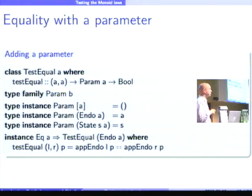So, I introduce a class TestEqual, which takes a pair of values, which I want to compare for equality, a parameter, which I need for determining equality, and then returns a boolean. So, this parameter here is a type family, and depends on the type you pass as argument.